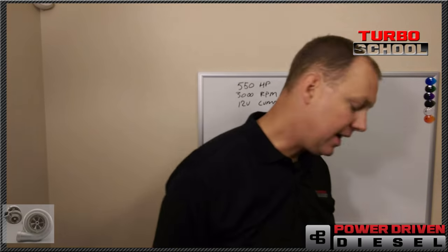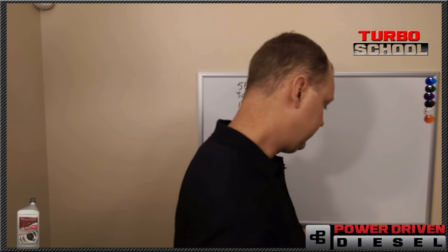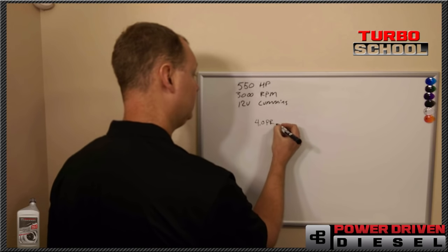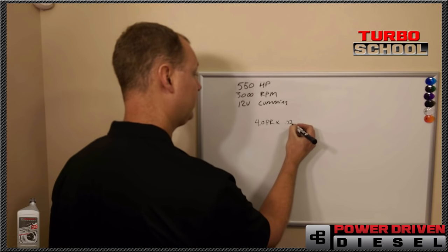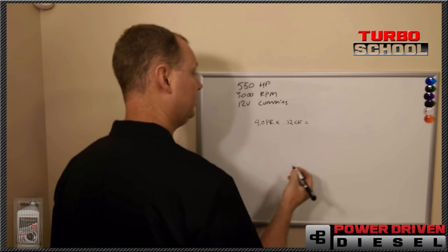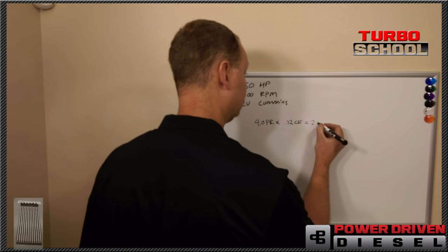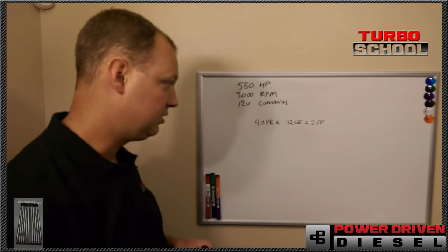The first thing I want to talk about is density ratio — that's the really important one. The formula is your pressure ratio times your compressor efficiency. With a 4.0 pressure ratio times 0.72 compressor efficiency, we came up with 2.88 as our density ratio.